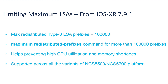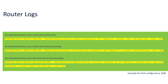This feature is supported across the entire NCS 5500 and 5700 portfolio. When the number of LSAs reaches or exceeds the threshold limit, or comes back within the threshold limit, the router displays the following logs.